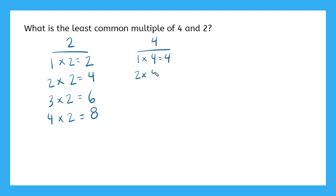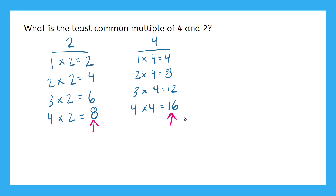Two times four is eight, three times four is twelve, and four times four is sixteen. So here we have two columns — my multiples of two and my multiples of four. Now I want to know: are there any common multiples between two and four? Are there any numbers that are the same in these columns? I have a four here and also a four here, and I have an eight here and also an eight here.